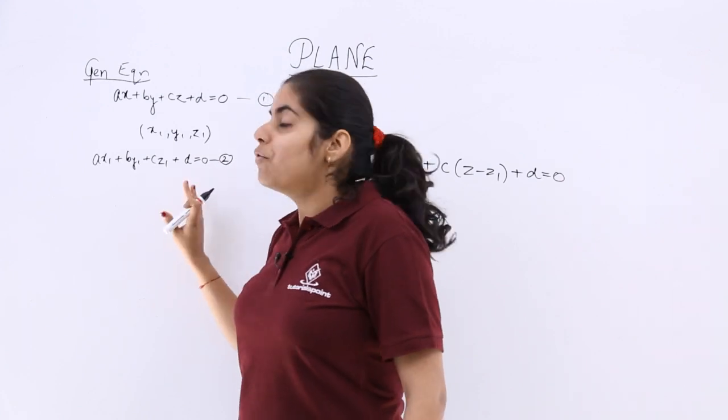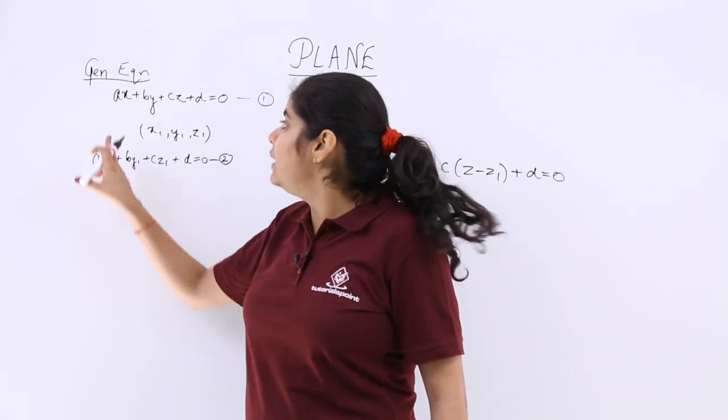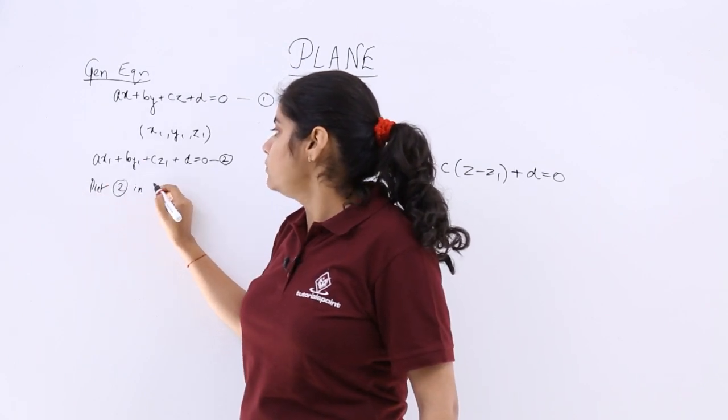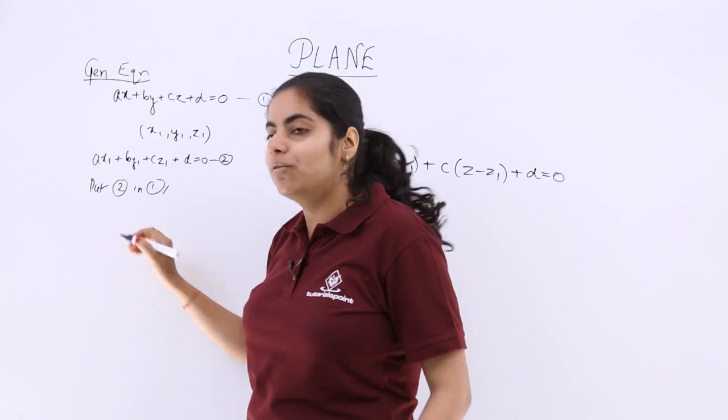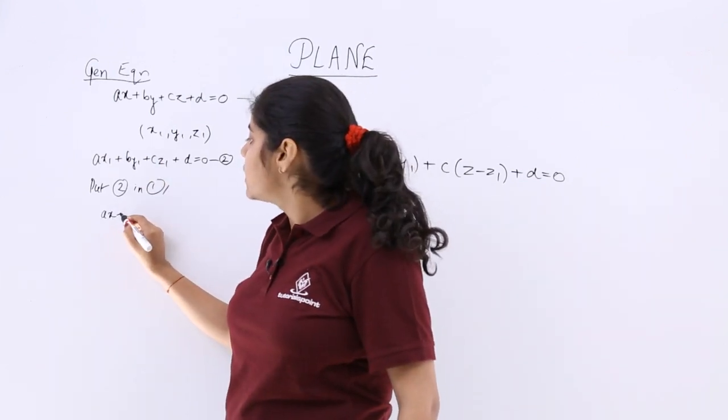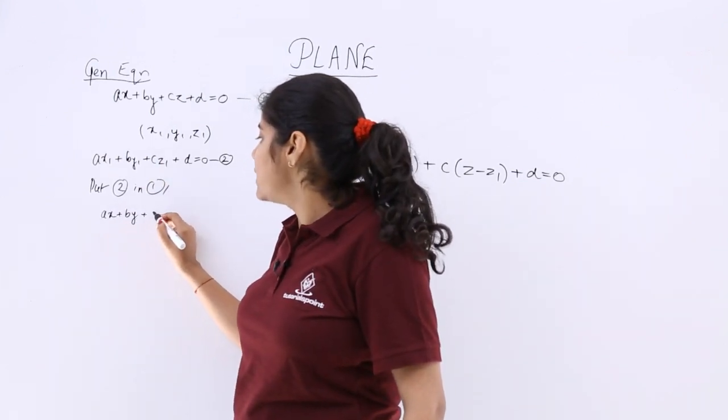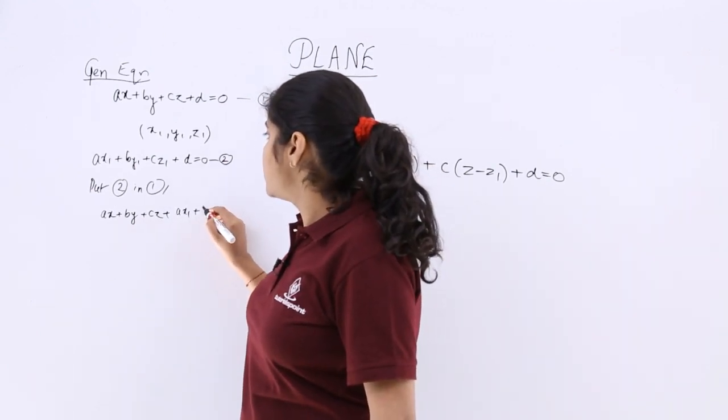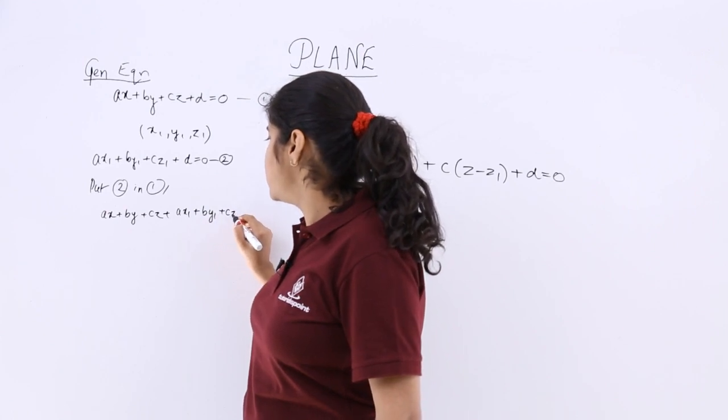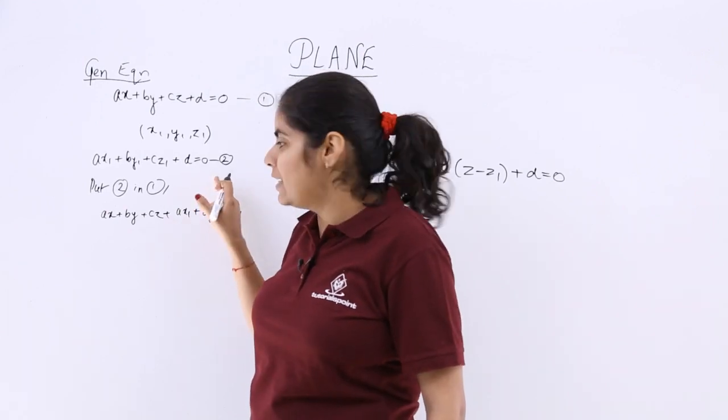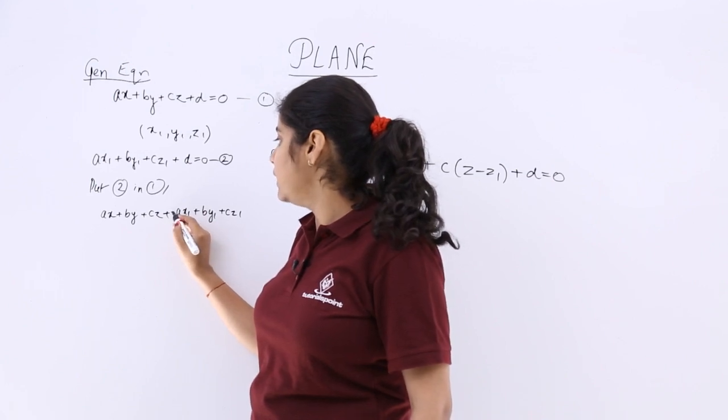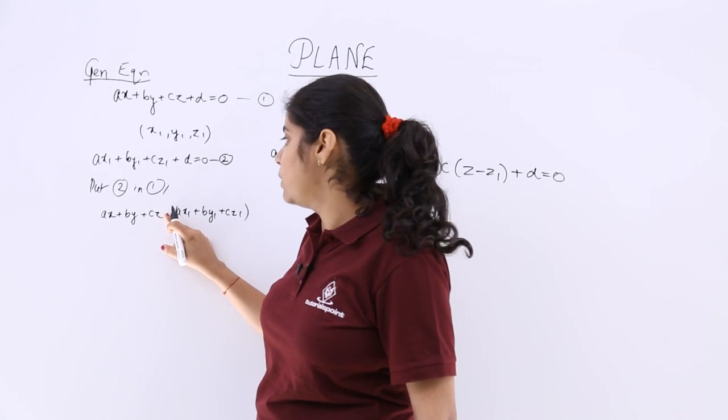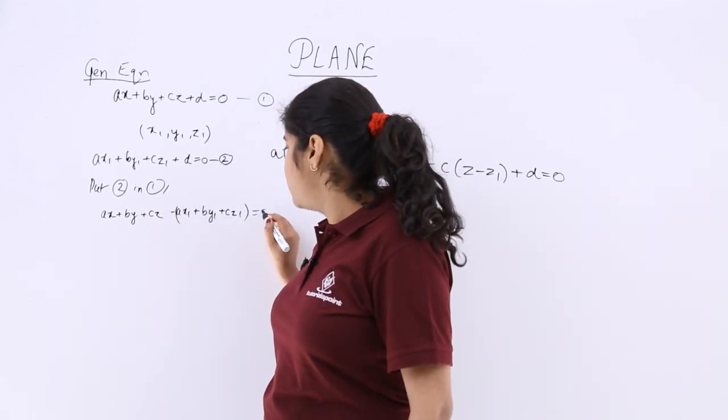So ax1 plus by1 plus cz1 plus d is equal to 0. This is equation number 2. From this equation number 2, take out the value of d and put in 1. So put basically only the value of d from 2 in 1. So it is ax plus by plus cz plus d. Now what is d? ax1 plus by1 plus cz1. It is minus d. So simply place a minus sign all over. Now this plus minus will become minus. And it is equal to 0.